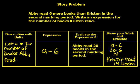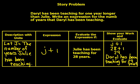Daryl has been teaching for one year longer than Julie. Write an expression for the number of years Daryl has been teaching. Let J equal the number of years Julie has been teaching. Since Daryl has been teaching one more year, we do J plus 1. If Julie has been teaching for twenty-eight years: J plus 1 equals twenty-eight plus 1 equals twenty-nine. Daryl has been teaching for twenty-nine years.